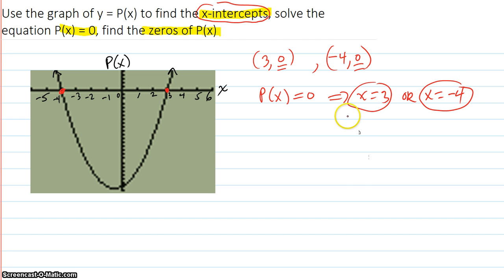So, those are the solutions. So, the solution set of x values that make p of x equals zero are 3, negative 4.